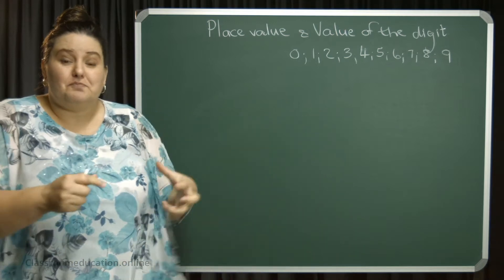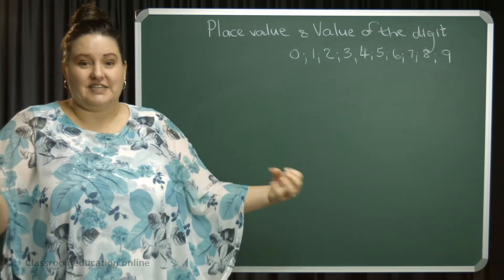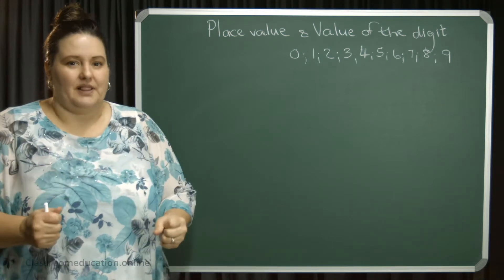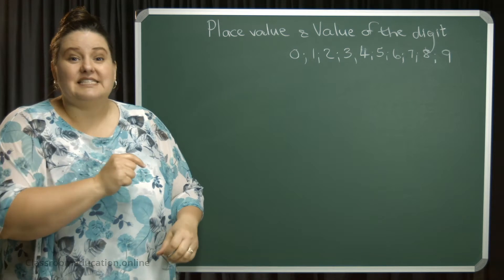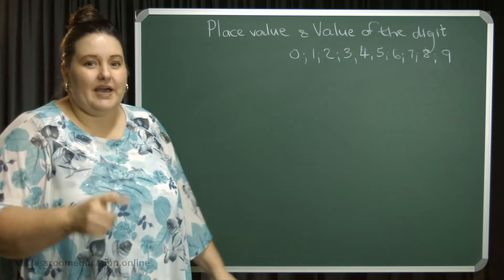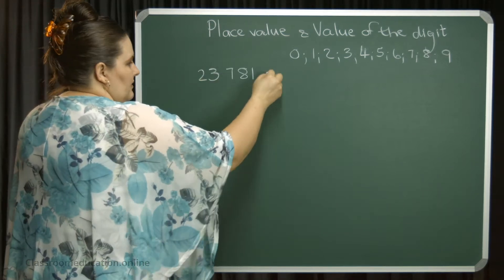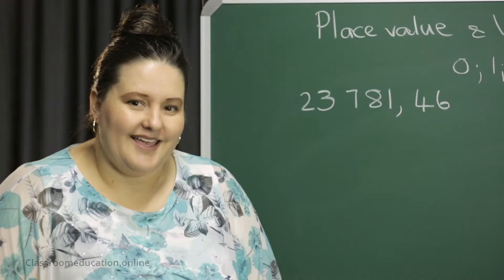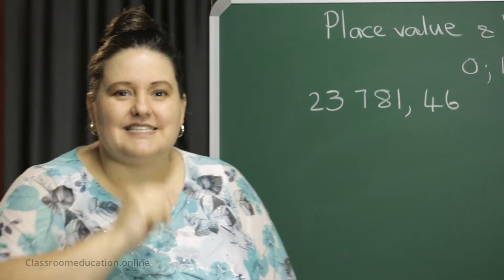To explain the difference between place value and value of the digits, I will do it according to an example. I'm going to give you a number — let's see if you can first read that number for me. Have a look at this one. Can you read this for me? Do you know what it is?